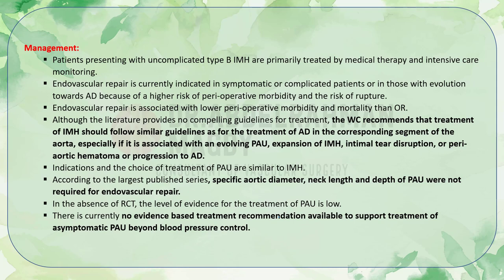Patients with uncomplicated type B IMH are primarily treated with medical therapy using beta blockers and intensive care monitoring. Endovascular repair is currently indicated in symptomatic or complicated patients, or in those with evolution toward aortic dissection, due to higher risk of perioperative morbidity and rupture. Endovascular repair is associated with lower perioperative morbidity and mortality than open repair. The working group recommends that treatment of IMH should follow similar guidelines to those for aortic dissection, especially if associated with an evolving penetrating aortic ulcer.